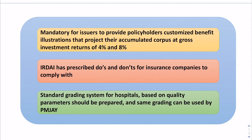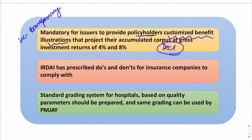IRDA has made it mandatory for insurers to provide policyholders customized benefit illustrations, to increase transparency and curb the mis-selling of life insurance policies. This must be done on two assumed rates of return. From December 1, 2019, insurers will provide customized benefit illustrations projecting the accumulated corpus at gross investment returns of 4% and 8% per annum.